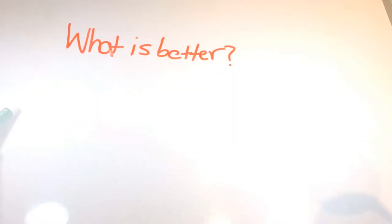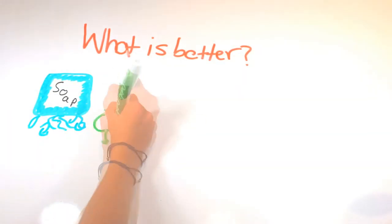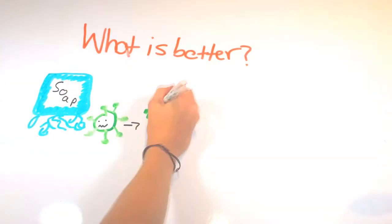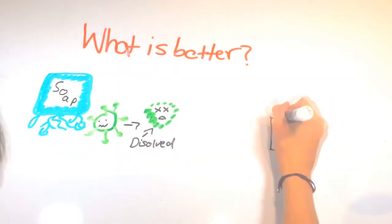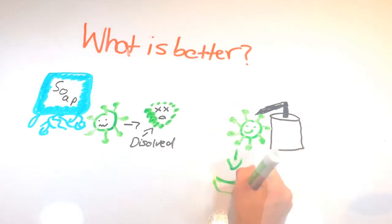But what is better? Well, soap inserts itself into the cell membrane and dissolves it. And like we said before, sanitizer kills bacteria by ripping open cell membranes. But sanitizer still leaves the bacteria on your hand, whereas soap completely eradicates and removes it.